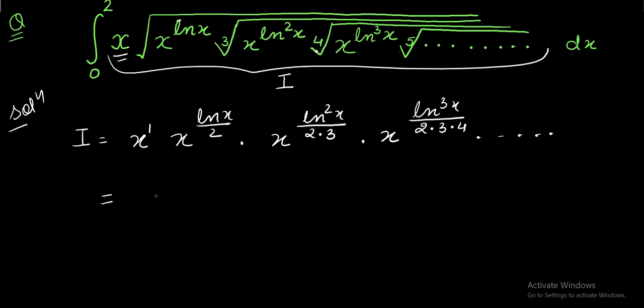Using the law of indices it turns out to be x power 1 plus ln x by 2 or you can write 2 factorial plus ln square x by 3 factorial, ln cube x upon 4 factorial and so on to infinity.